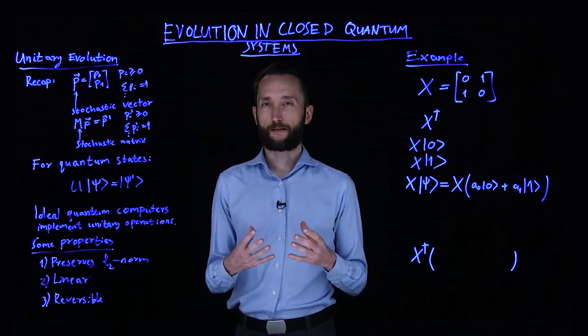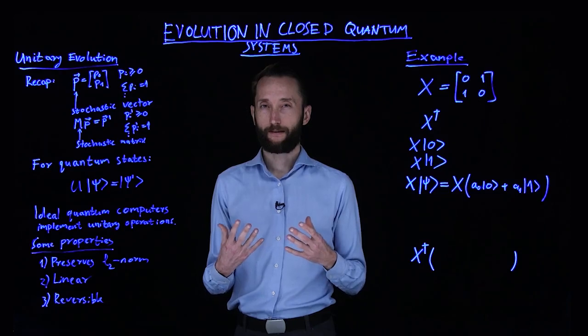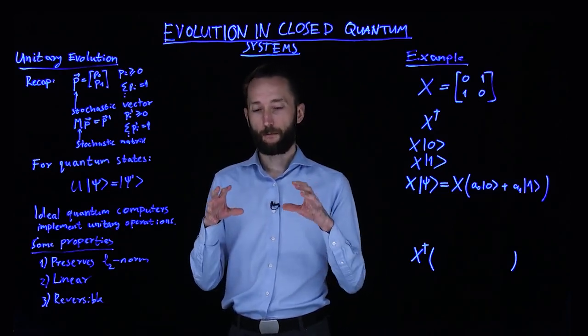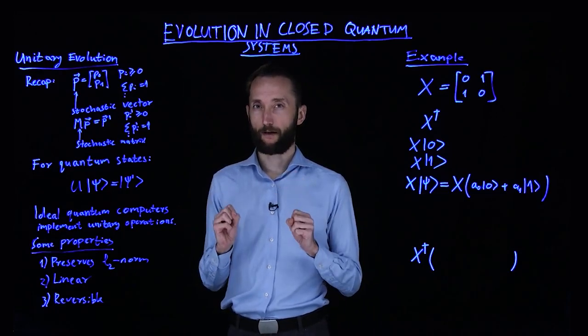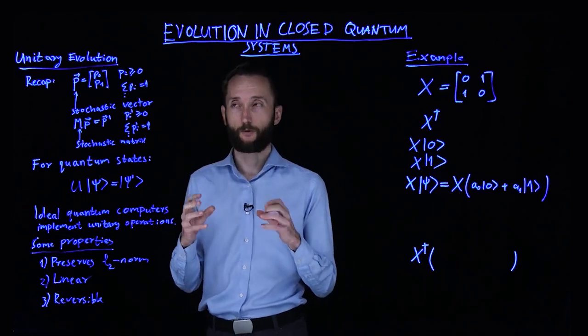So we start with closed systems, which means that the evolution is going to be unitary. This is the idealized version of a quantum calculation. But before we actually explain what it means and what it implies, let's take a look at how we transform classical probability distributions.